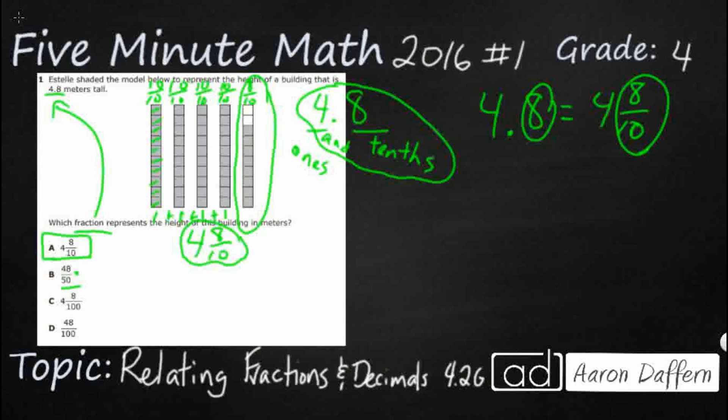You could do something with this here. You would have to multiply top and bottom by 2 to make it into a denominator of 100. And so you could get 96. So this is really worth 96 hundredths, which is not what we need up there, 4 and 8 tenths.